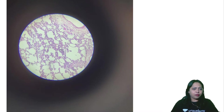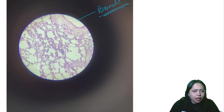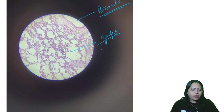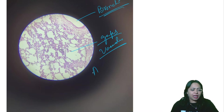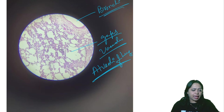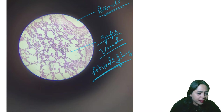The next slide shows a lumen with a rough-edged surface — that is one of the bronchi. You can also see lots of gaps and vacuoles around it, which are the alveoli of the lung from a different angle.